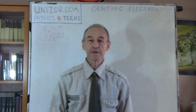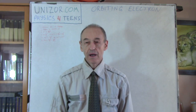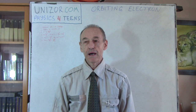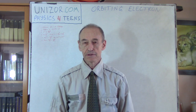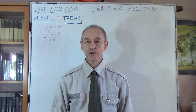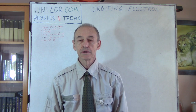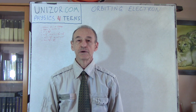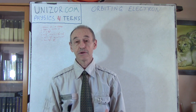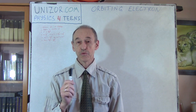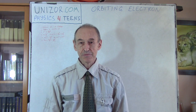Hi, I'm Zor. Welcome to Unisor Education. I'd like to talk about certain dynamics of an electron rotating around the nucleus of a hydrogen atom. Why hydrogen? Because it has only one electron — the simplest model.